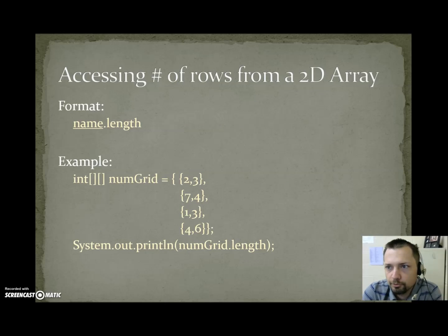Accessing the number of rows from a 2D array. If we say name.length, that's how many rows there are. So int bracket bracket numGrid equals curly brace, the same grid from earlier, 2, 3, 7, 4, 1, 3, 4, 6. If you'll notice, that has two columns but it has four rows of information. So when we say numGrid.length, we would get four, because that's the number of rows.